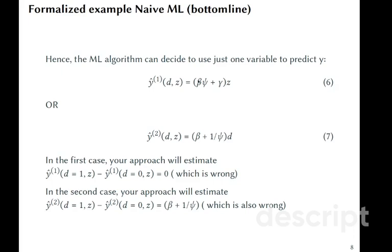And in the first case, if it chooses this functional form predicting y only using z, the confounder, your approach will estimate treatment effect to be zero, which is wrong, right? Because d is not here, it will not change your prediction.